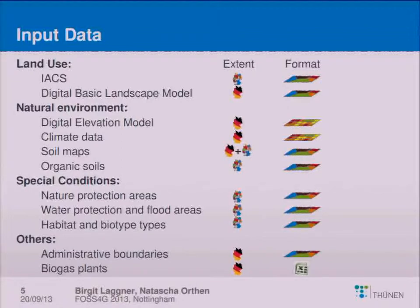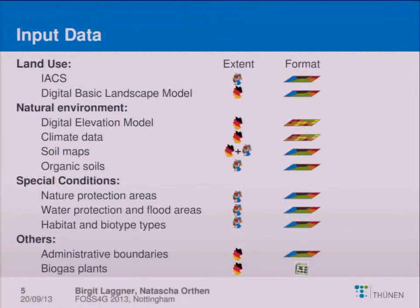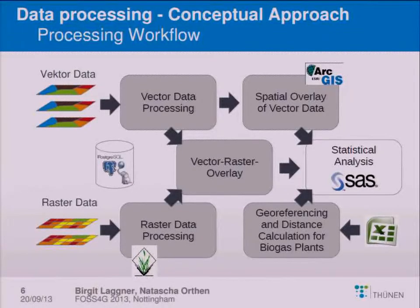The IACS (Integrated Administration and Control System) is very detailed data on field scale in a vector format. It combines GIS data with land use and land use-related information, but it's only available for areas for which subsidies have been paid. Outside that setting, we use a digital basic landscape model for Germany.